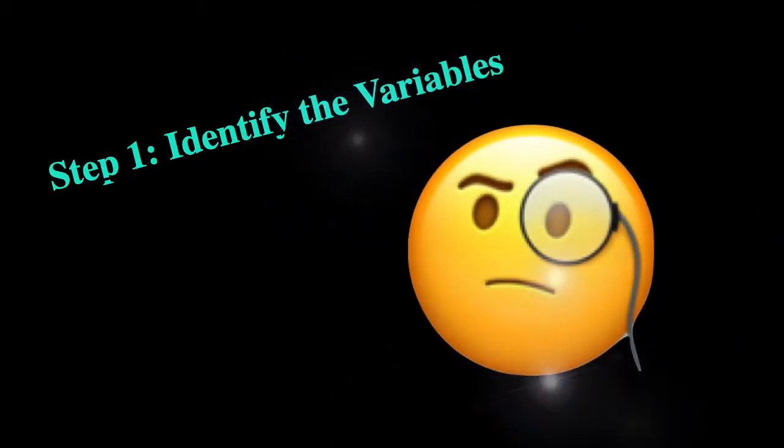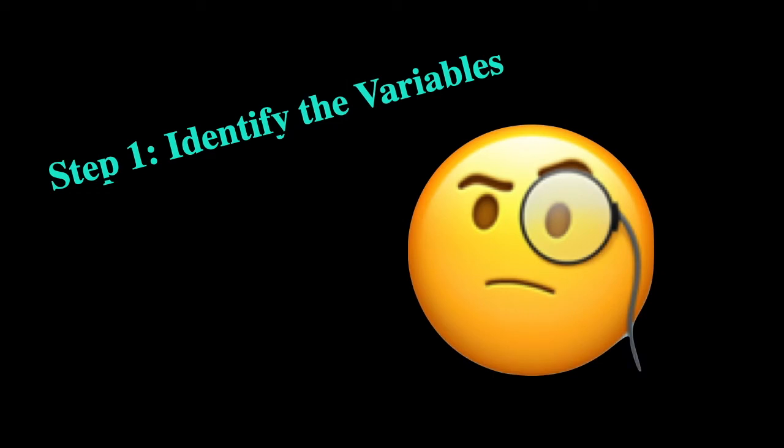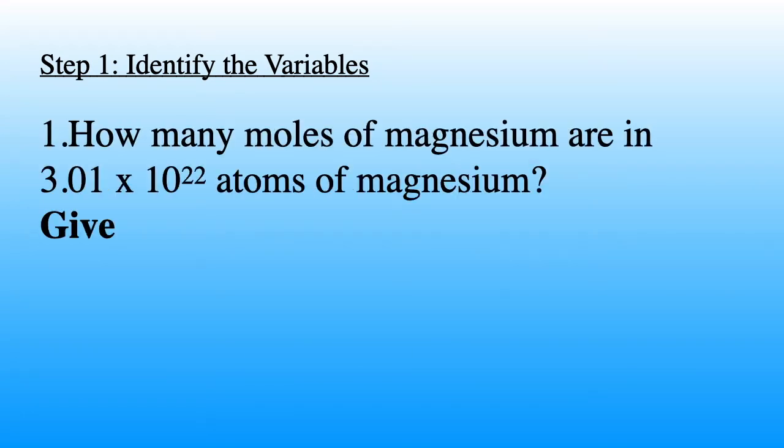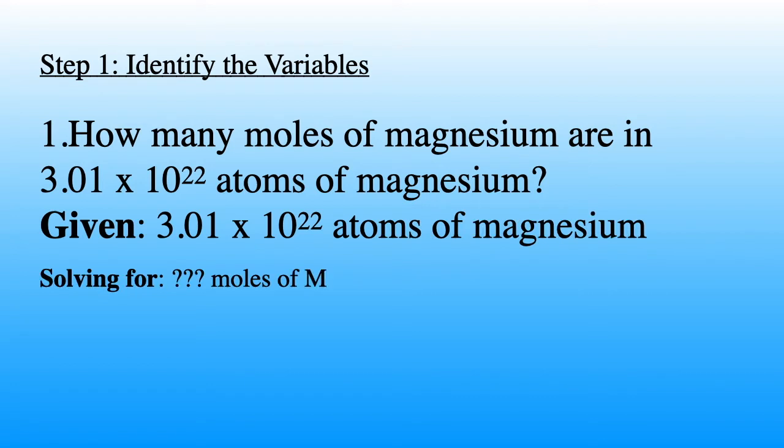The first one is identifying the variables. We need to identify the variables first before we can solve the equation. So let's go back to the problem. In order to identify the variables, we want to start off by what's given. What's given is 3.01 times 10 to the 22nd atoms of magnesium. What we are solving for is the number of moles of magnesium.